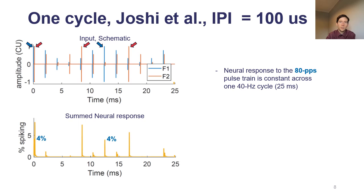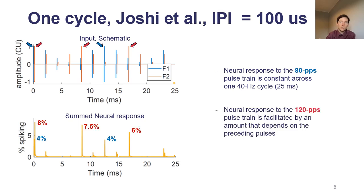Now the response to the red, the 120 Hz pulse train, in general is a bit stronger than for the 80 Hz pulse train, but also it's not constant across its three peaks.